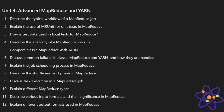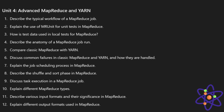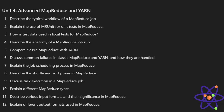Unit 4 covers advanced MapReduce and YARN. You will learn about MapReduce functions, the YARN job scheduling process, different types and output formats of MapReduce, common failures in classic MapReduce and YARN and how they are handled, and the workflow of a MapReduce job. You can learn from online resources for these topics, which are also important for data science.